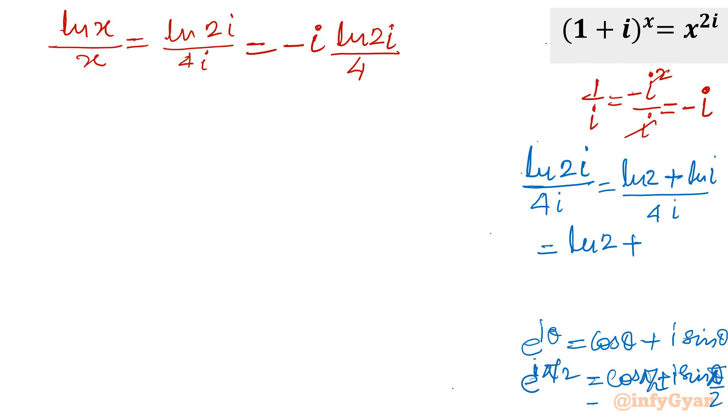Now you can see cos 90 is 0, sine 90 is 1. So this value is i. So in place of ln i, I will write ln e raised to the power i pi by 2 divided by 4i. So finally ln e raised to the power i pi by 2, that would be i pi over 2 divided by 4i.